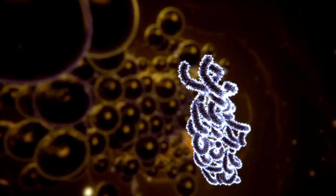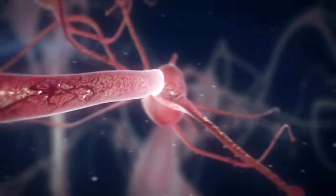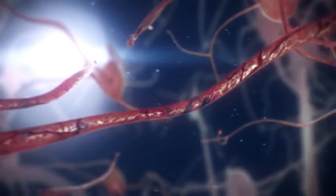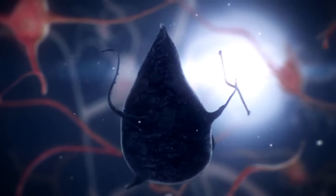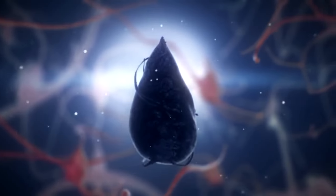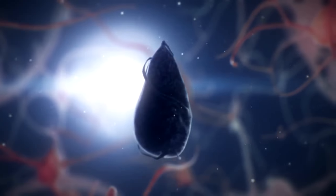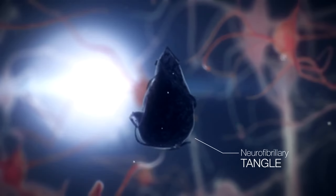Defective tau proteins then assemble to form filaments in the neuron. Without the skeleton, the neurons degenerate and connections between the neurons are lost. The abnormal accumulation of tau filaments in the neuron creates neurofibrillary tangles and eventually causes the death of the neuron.